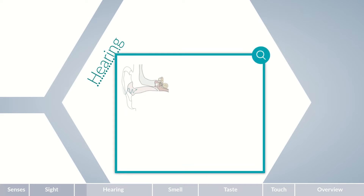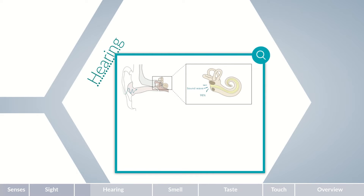The airborne sound reaching the inner ear is transmitted to the fluid-filled cochlea. Without any adjusting processes, this would cause 98 percent of sound to be reflected, as the acoustic impedance of air and water differ greatly. Therefore, the ear employs a process called impedance matching, in which auditory ossicles located in the middle ear transmit sound as vibrations to the oval window of the cochlea.